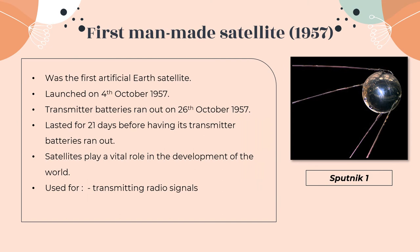Another example of technology is the first man-made satellite, Sputnik 1, launched by the Soviet Union on October 4th, 1957. It was called an artificial satellite to differentiate it from the moon, which is a natural satellite. It continued giving signals until October 26th, 1957, lasting 21 days before its transmitter batteries ran out. From this event, people realised the importance of satellites in keeping the flow of information throughout our lives by transmitting radio signals. This invention helps society communicate easily with other people, making our lives significantly easier.